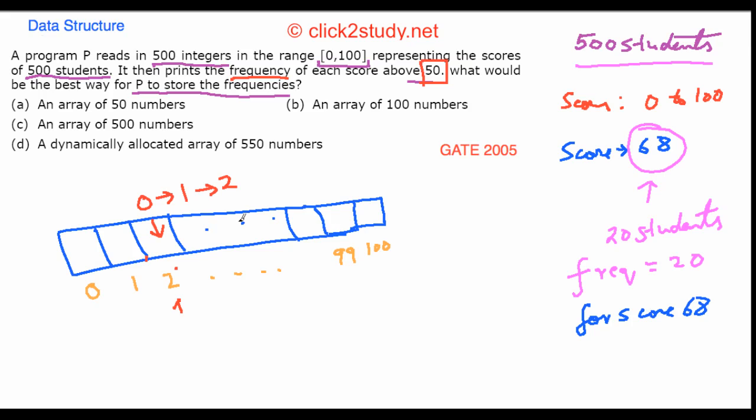But since you are interested only in the frequencies that are above 50, you don't need to store frequencies before 51. All you need is to store from 51 to 100. You see that score, you increase these values, and they'll store the frequencies.